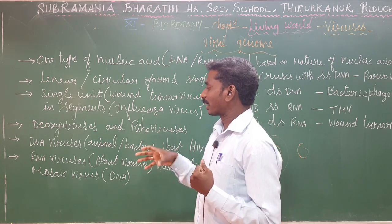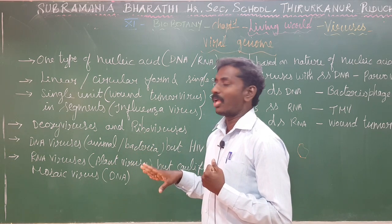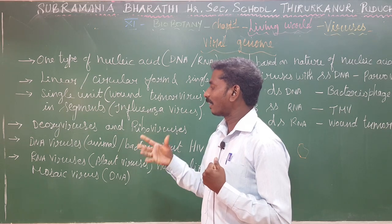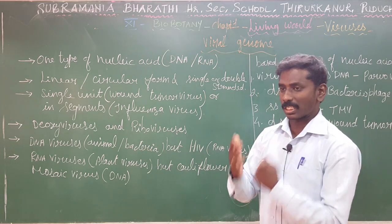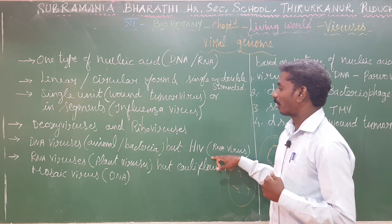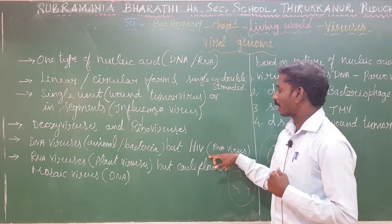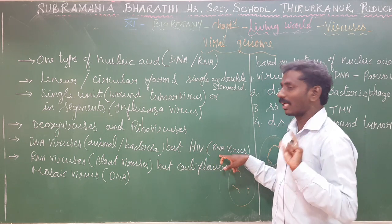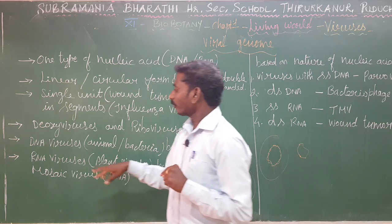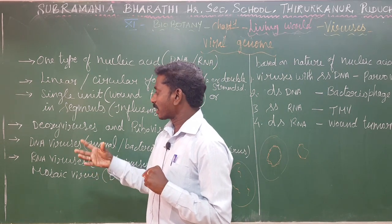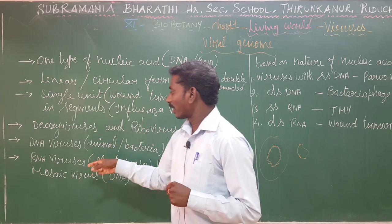Generally, DNA viruses cause disease in animals and bacteria — they are called animal viruses. The exception character is HIV, the virus that causes AIDS. HIV is an RNA virus, not a DNA virus, making it an exception among animal-infecting viruses.